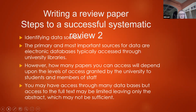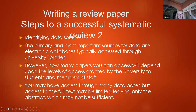The next step in the process is to identify your data sources. The primary and most important sources for data are electronic databases, often accessed through university libraries. How many papers you can access will depend upon the levels of access granted by the university to students and members of staff. Oftentimes you may have access through many databases, but the full text may be limited, leaving only the abstract, which may not be sufficient for you to decide whether to include that paper in your review.